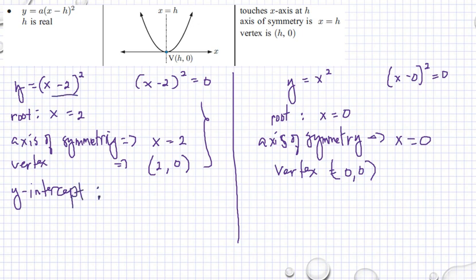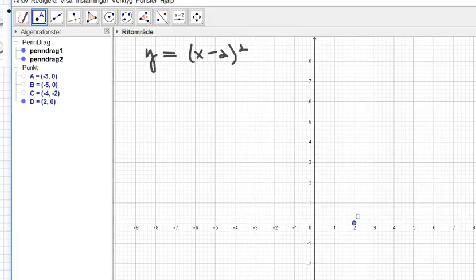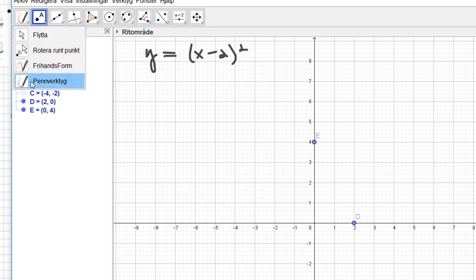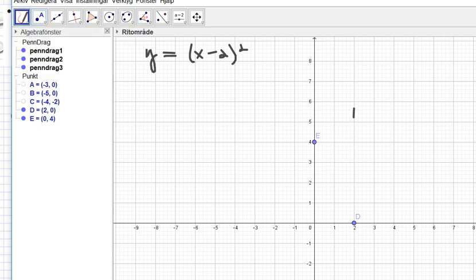But the problem is, what will be our y-intercept? When x equals 0, then we have 4. Our intercept, how could it be 4? Because we have negative 2 squared is 4. Then y-intercept will be 4 here. This is the axis of symmetry.